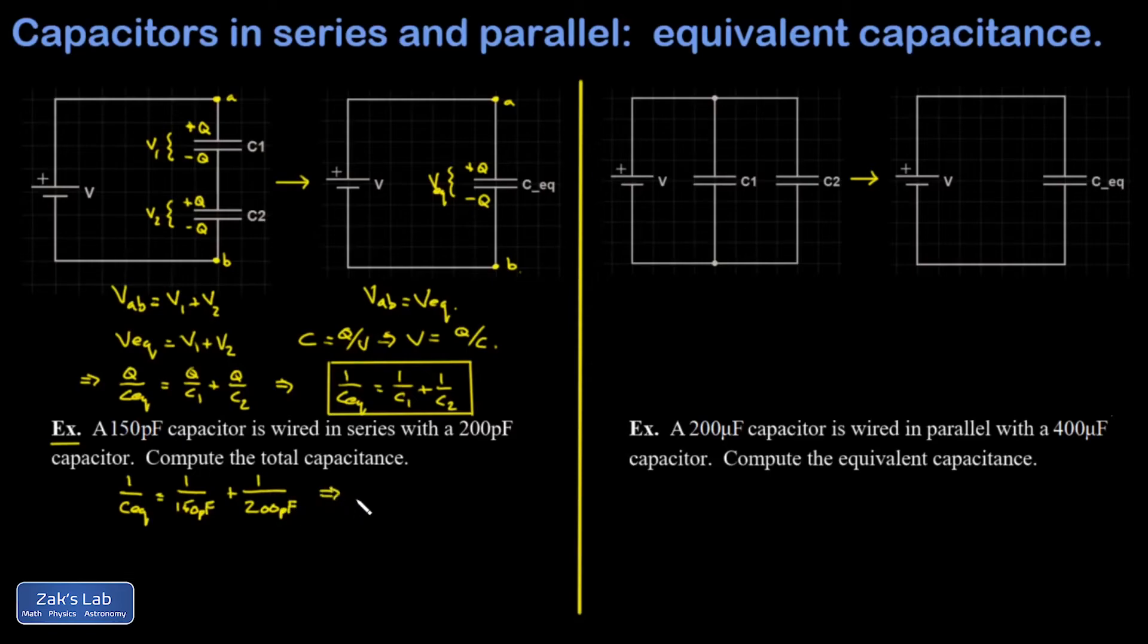And the way I normally handle this in a calculator, I'll just take one over 150 plus one over 200, press enter, and then do one over that answer. And I get the reciprocal of the left-hand side. In other words, CEQ.